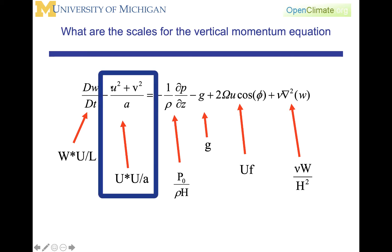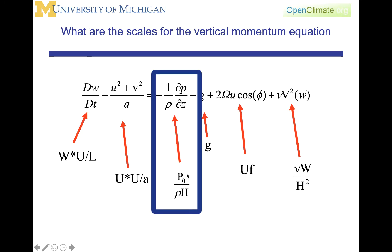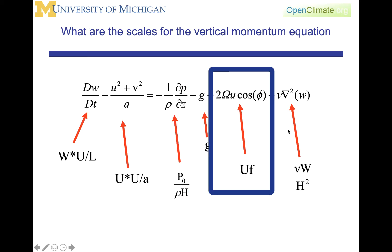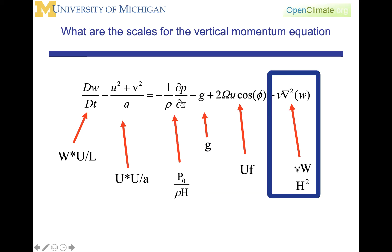Here, the Coriolis term is represented by the scales of the horizontal speed over the radius of the earth. The pressure gradient term is going to be represented by p times the vertical scale factor over h squared.